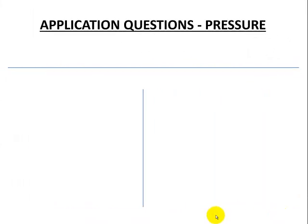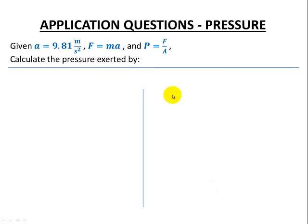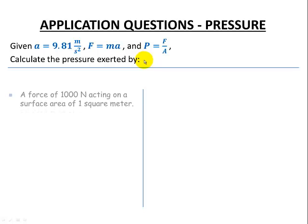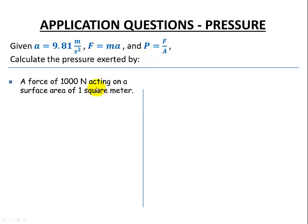Let's take a look at some examples. We're given that gravitational acceleration is 9.81 meters per second squared. Force is given as mass times acceleration, and pressure is force divided by area. Let's calculate the pressure exerted by a force of 1,000 newtons acting on a surface area of one square meter.